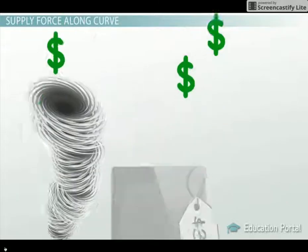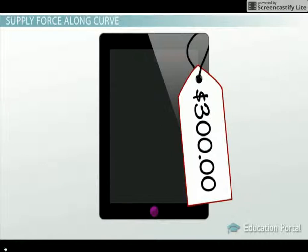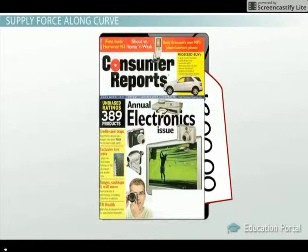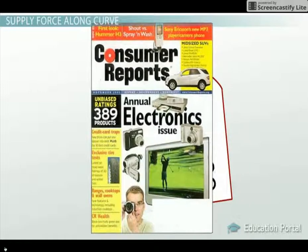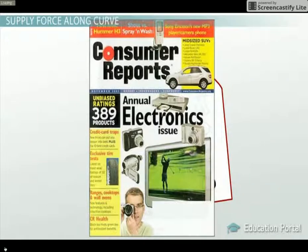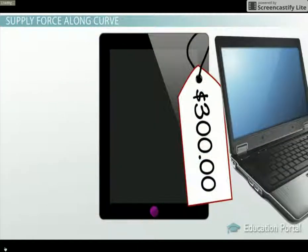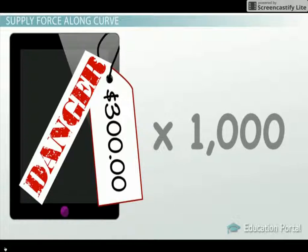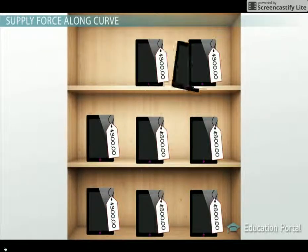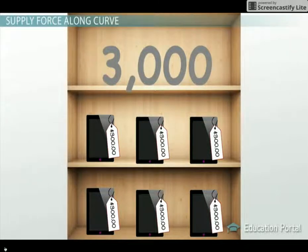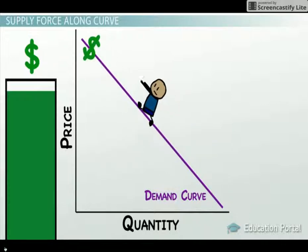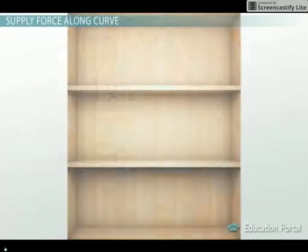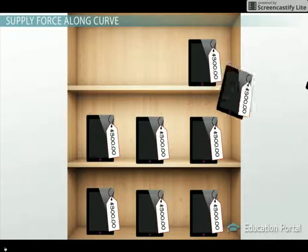Imagine that a new computer tablet is released for $300. Because the computer company's previous experience and analysis shows that consumers will not demand computer tablets at a price higher than $300 — they found that people simply shift to laptops at that point — they only offer 1,000 tablets. It is simply too risky to produce any more before they see how it will sell. If, however, the 1,000 tablets sell quickly and are actually demanded by 3,000 people, natural market forces will cause the price to rise as consumers bid up the price to get a tablet. As a result, the tablet company is now willing to produce more tablets at higher prices.